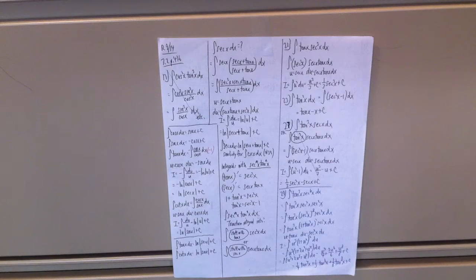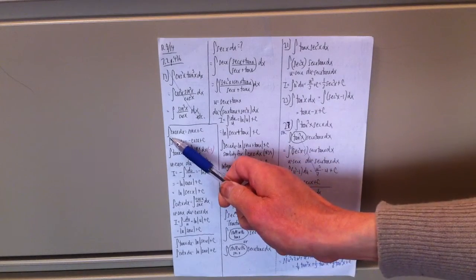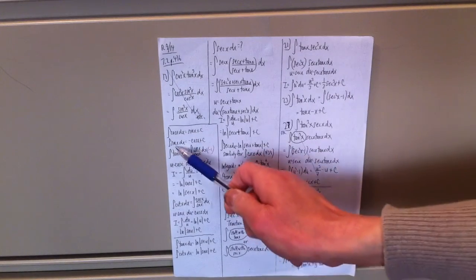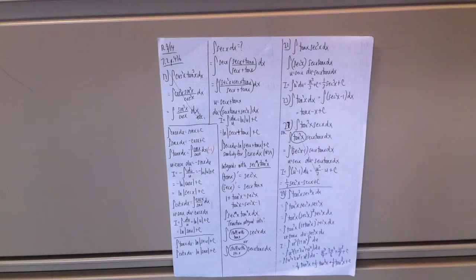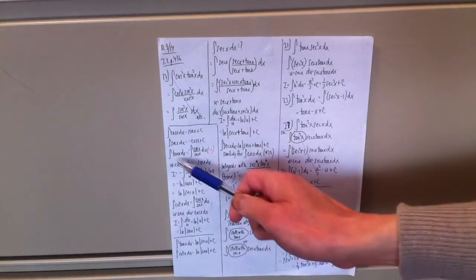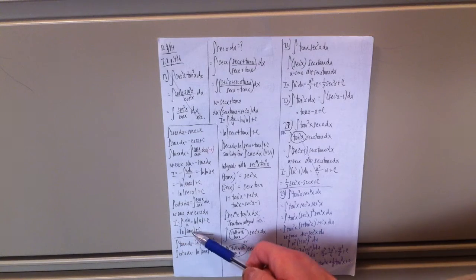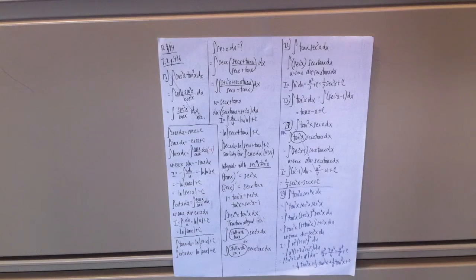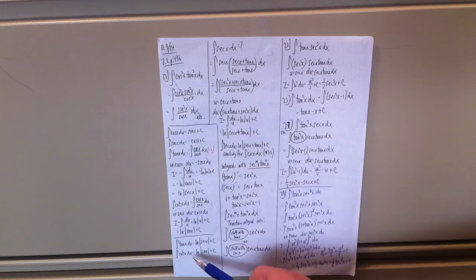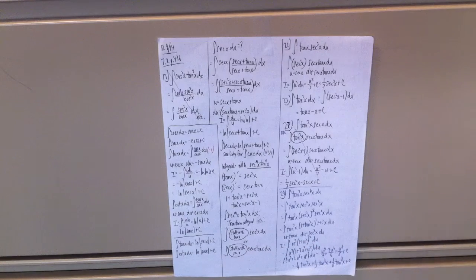I'm not holding you responsible for that derivation. You should already know the integral of cosine is sine, and the integral of sine is negative cosine. The integral of tangent is ln|sec x| + C, and the integral of cotangent x is ln|sin x| + C. You can put those on your formula sheet.